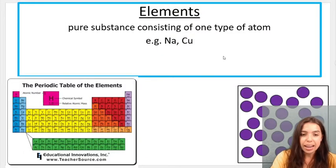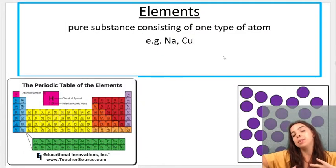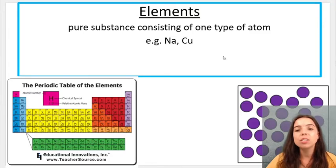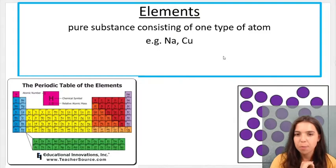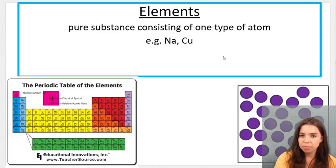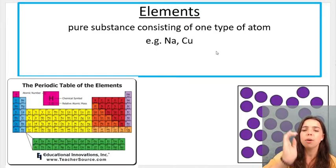So we've got elements. Elements can be found on the periodic table of elements, as you can see over here, and they consist only of one type of atom. So sodium consists of sodium atoms. Copper consists of copper atoms.